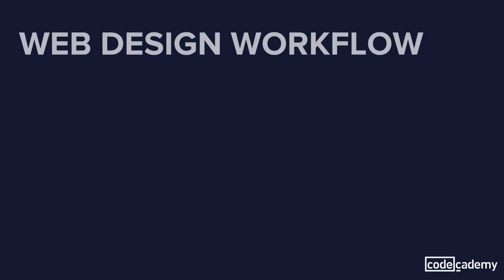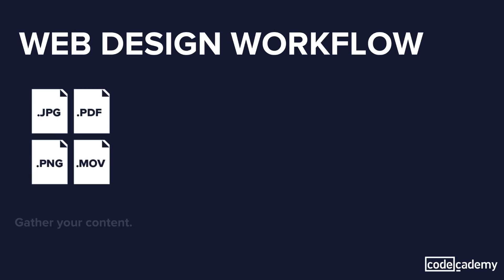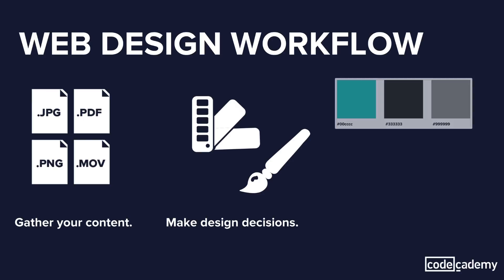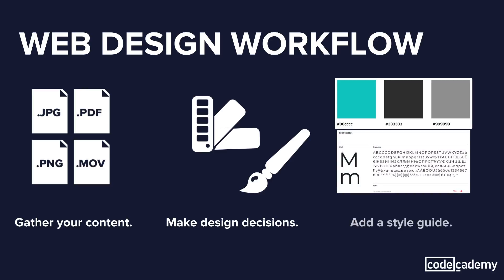As we move along the web design process, we gather our content. Our content may be images, text, or video files. As we gather our content, we make design decisions — we decide what colors we're going to use, we choose between the images that we have, we edit our text and choose typography. Moving from gathering our content and making design decisions, we add a style guide that contains our colors, our type, and other info that stylizes our site. All of this informs our HTML and our CSS as we build.